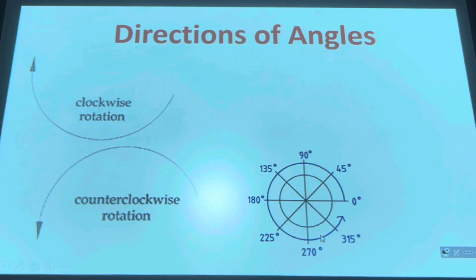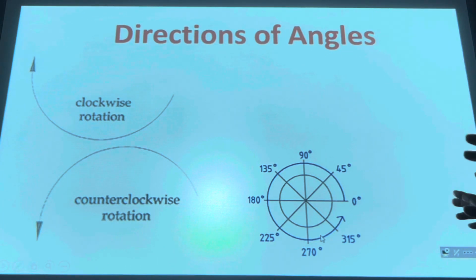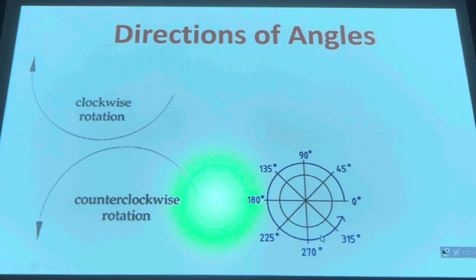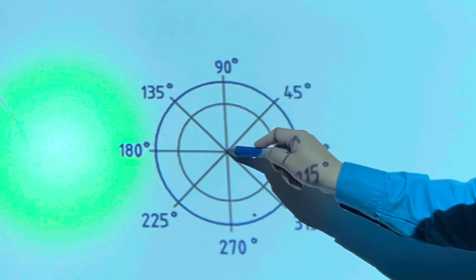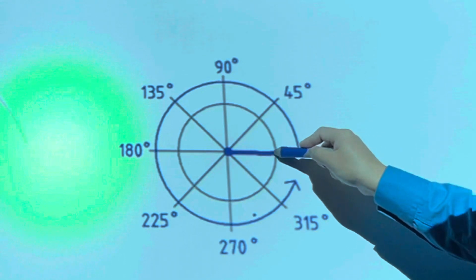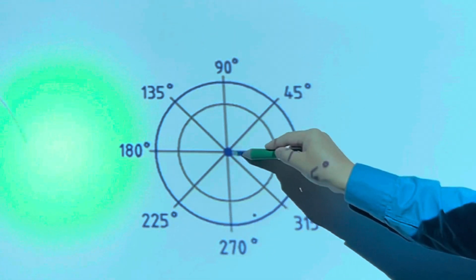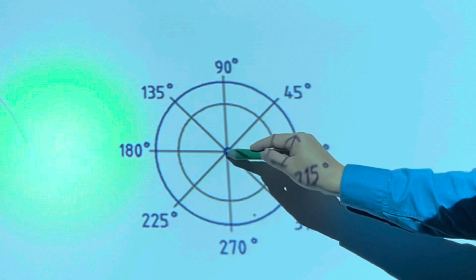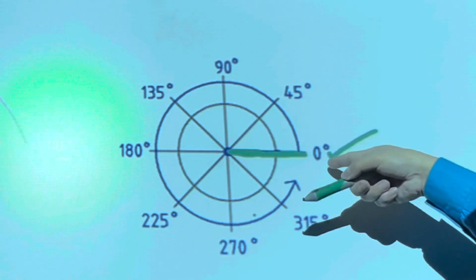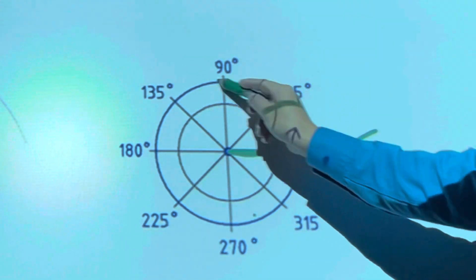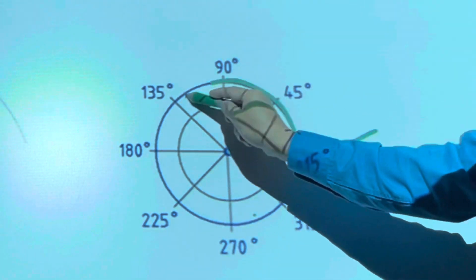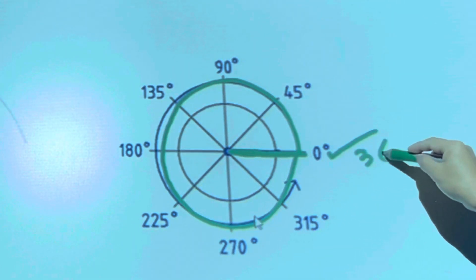There are two directions an angle can have: clockwise rotation or counterclockwise rotation. If the terminal side does not move, it's equivalent to zero degrees. A full rotation is 360 degrees, and a half rotation — from here up to this point — is 180 degrees.